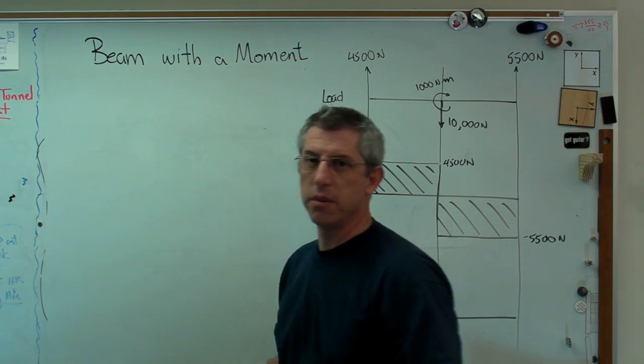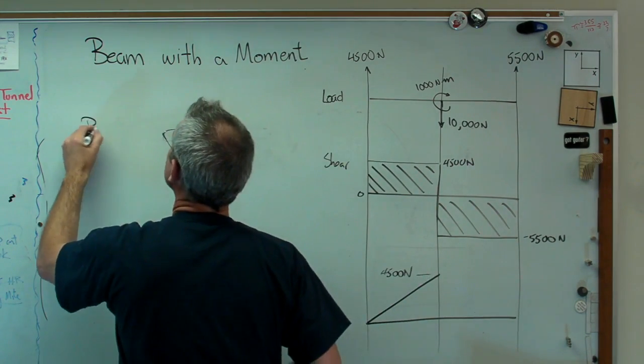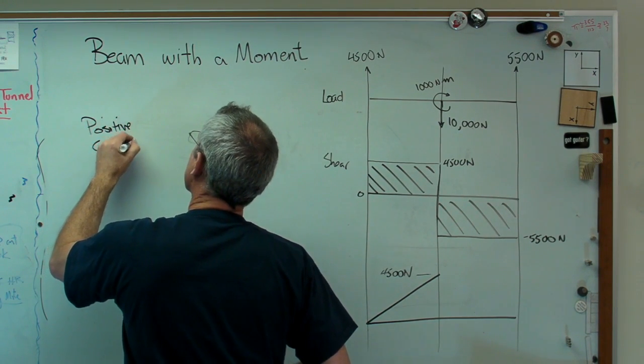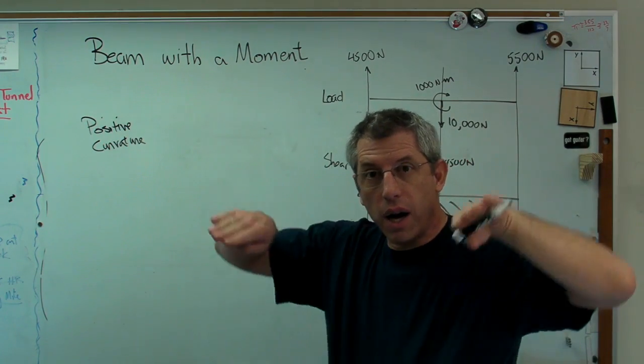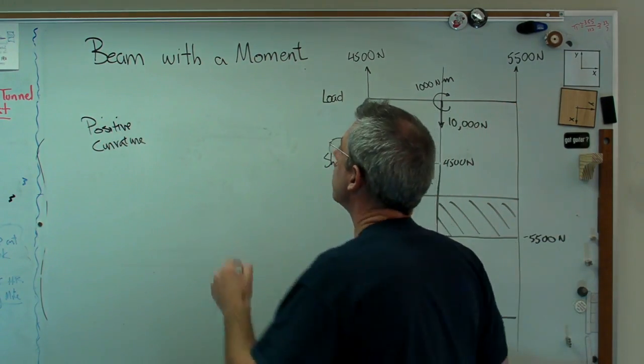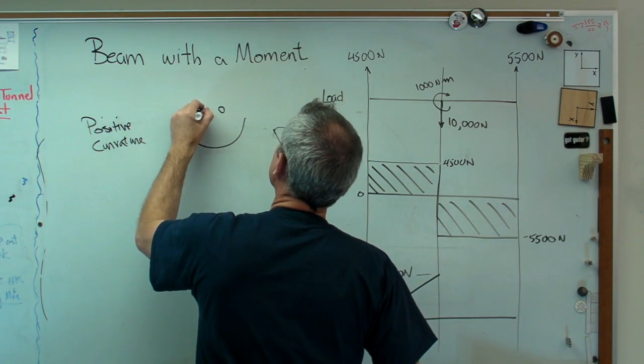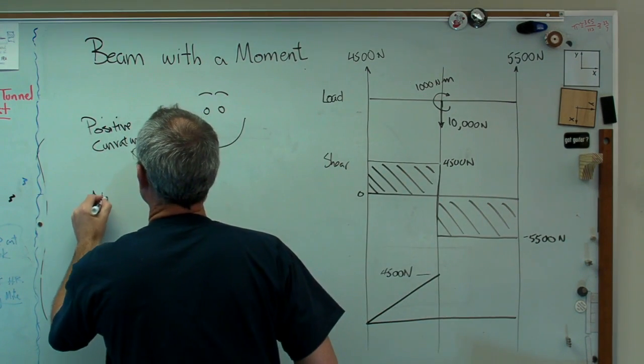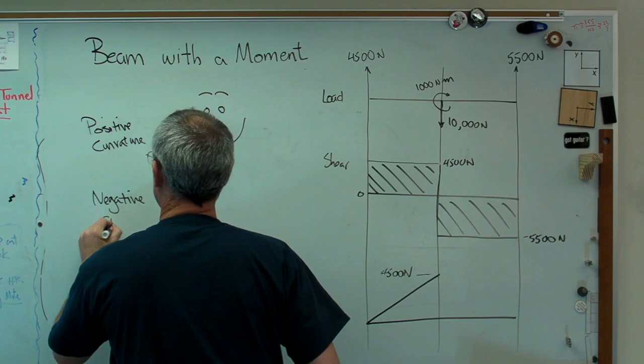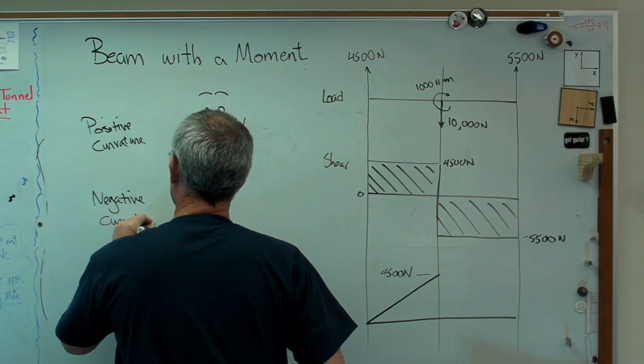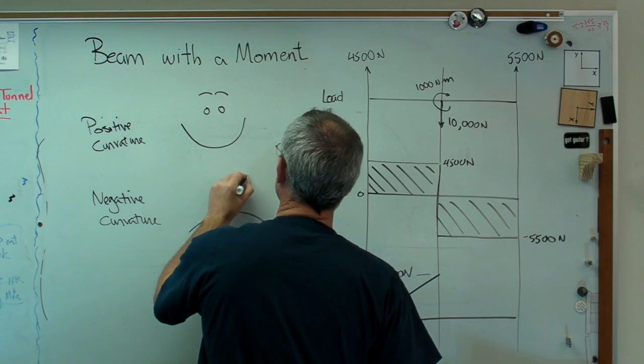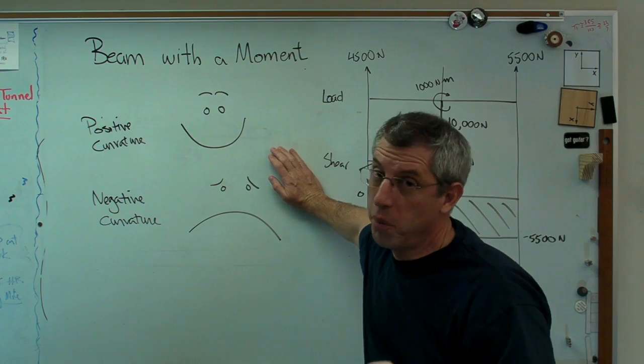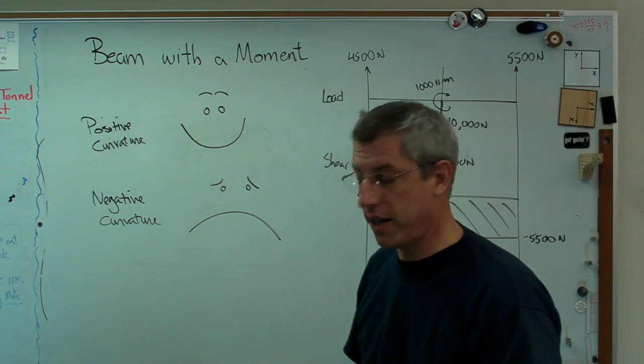Designer's sign convention says that anything that induces a positive curvature is a positive moment. So this is going to be one of the dumbest things I ever draw on the board. But here's how you can tell what positive curvature is. Positive curvature curves up on the ends, down in the middle. That's positive. Negative curvature curves down on the ends. This is silly, but you're going to remember it. Positive, negative. That's how you remember it.